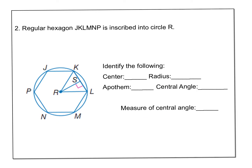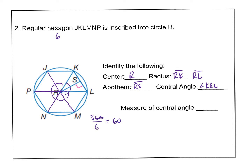Now we look at a hexagon — six sides. My center is R. My radius would be RK or RL. My apothem would be RS. My central angle would be KRL. The measure of the central angle: since it's a regular hexagon, all the triangles are congruent, so I take 360 divided by 6 and get 60 degrees as the measure of my central angle.